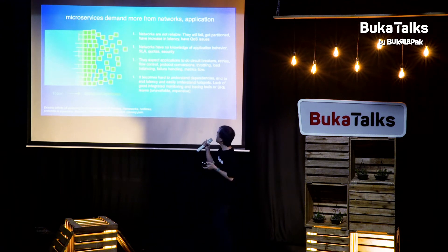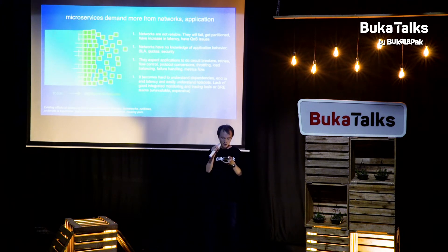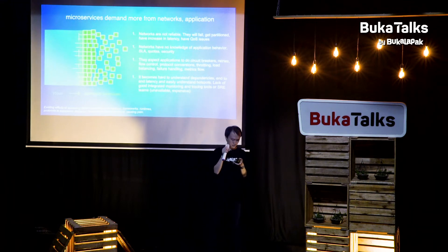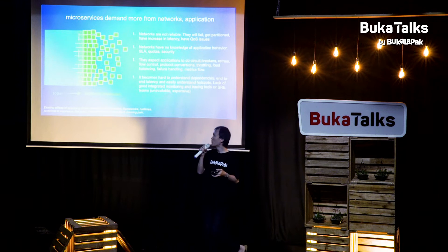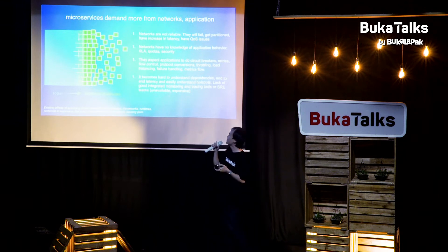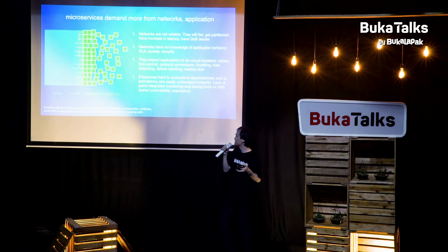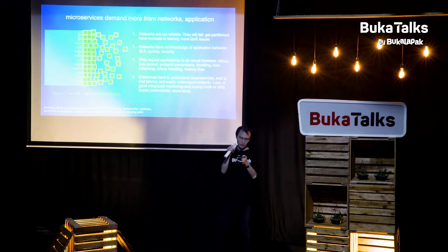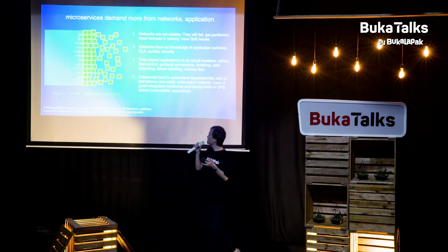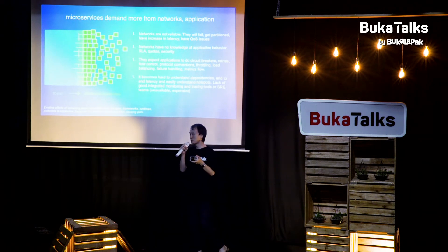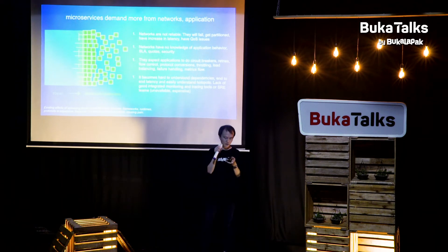It becomes very hard to understand which microservice depends on which, and where the hot spot is when you have a very long latency request — which service is slow and causing the overall request to have long latency. It lacks good integrated monitoring and tracing tools for SRE teams to understand what's going on. Libraries like Finagle and gRPC were efforts to address this, and so Istio was created to uniformly solve this.